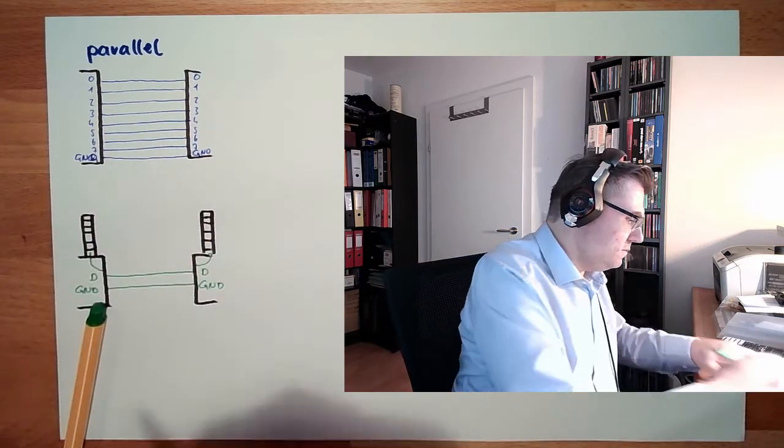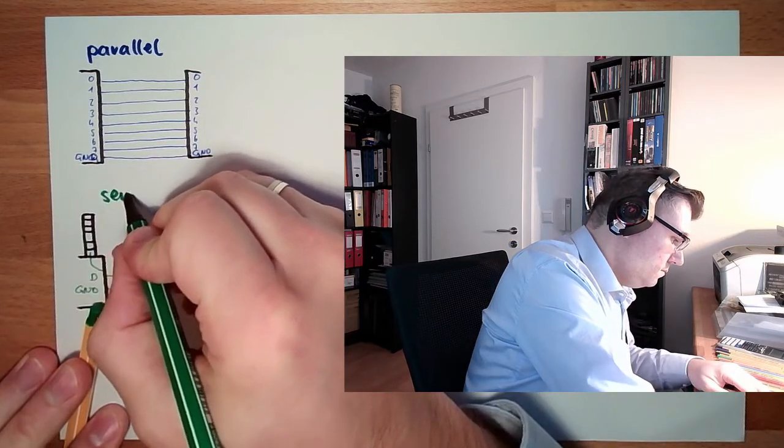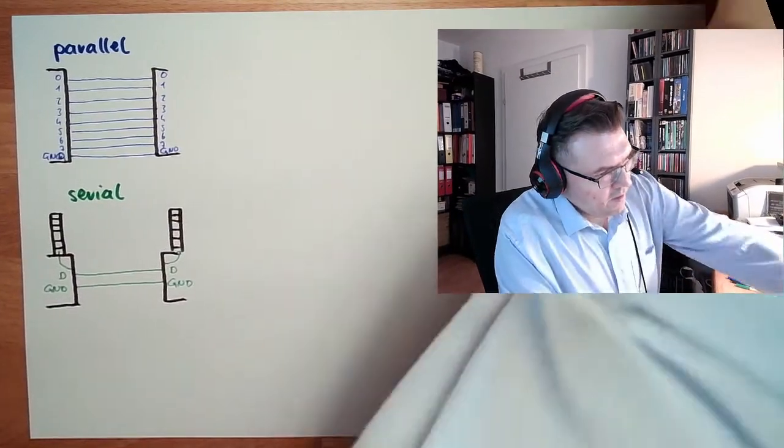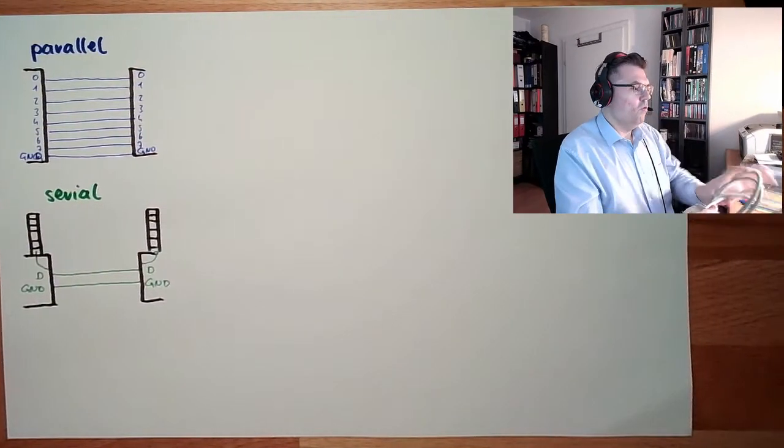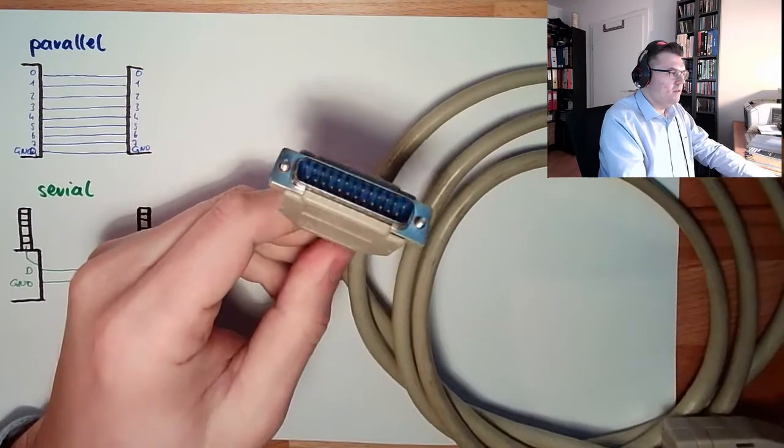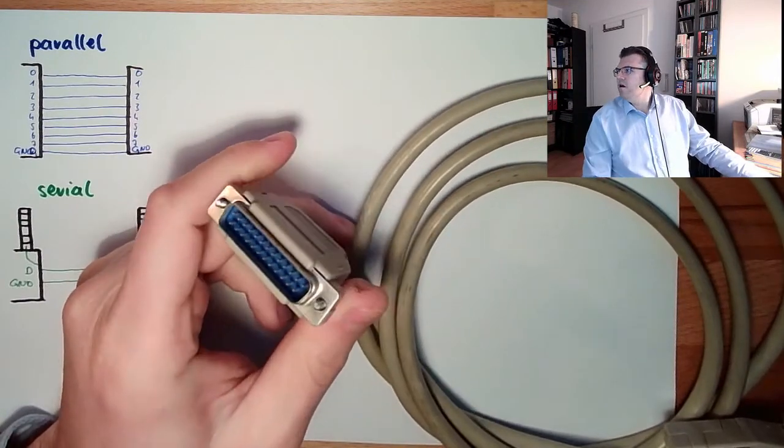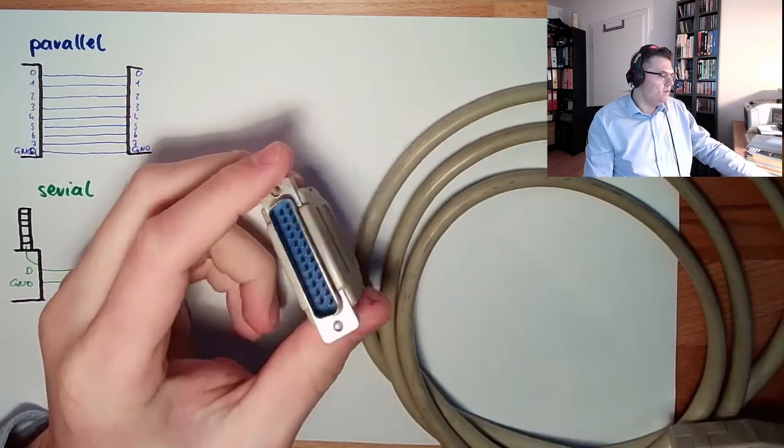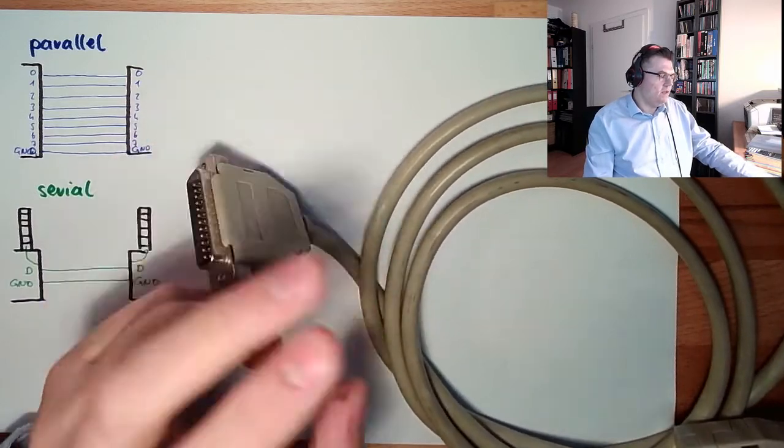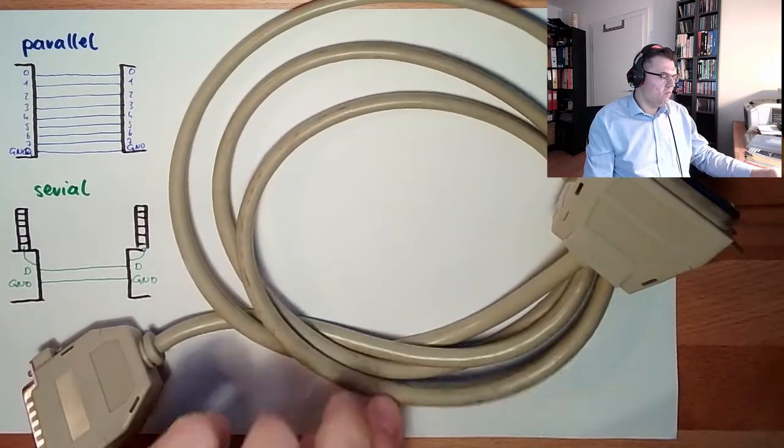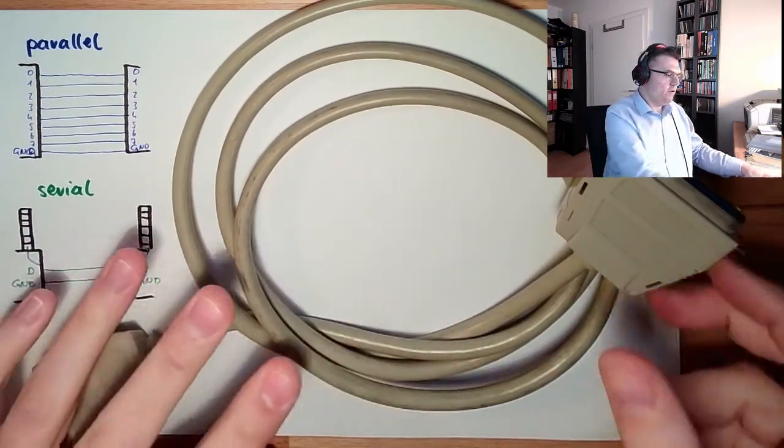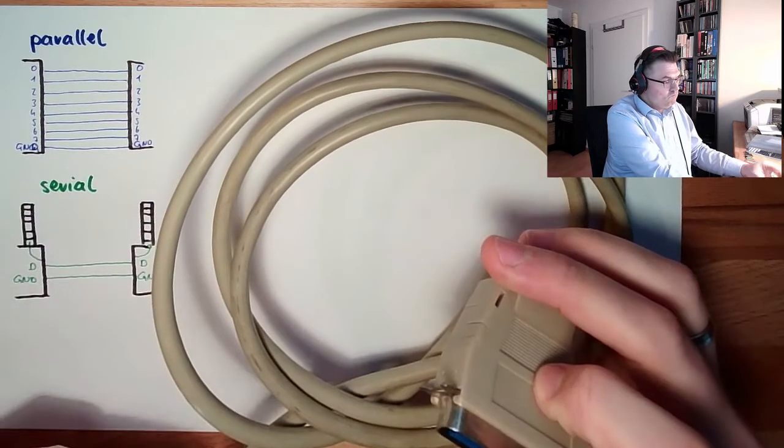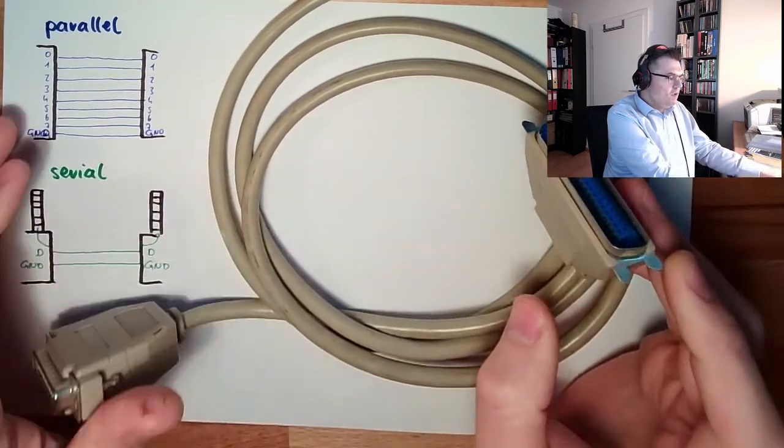So there needs to be some logic inside. This is called serial. Here we have something, an old cable. This is a parallel cable. You see, a lot of connectors here. And inside here, there are a lot of wires, which are transferring it to the other end, where again, a lot of connectors. Parallel cable.